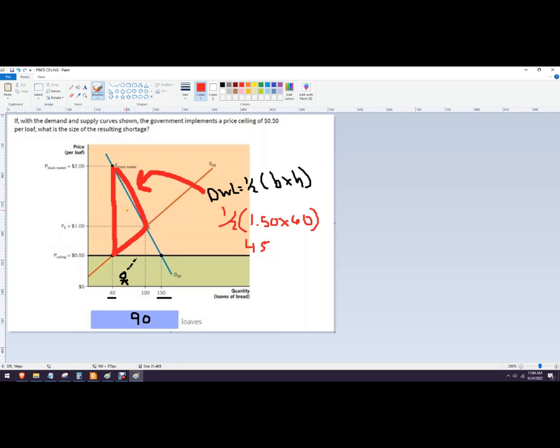In case you were asked what this portion of the deadweight loss is from the consumer surplus, it would be right here - so that portion there. And then the loss to the producer surplus would be down here.